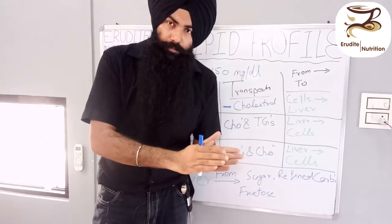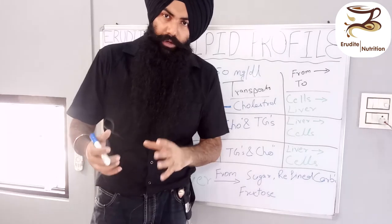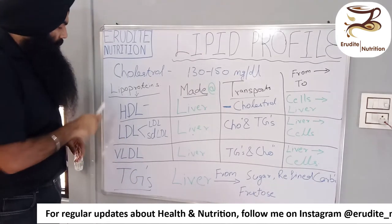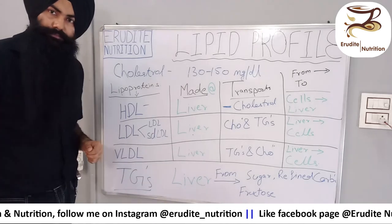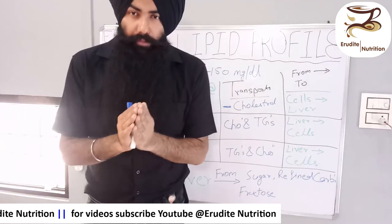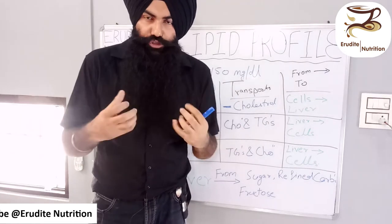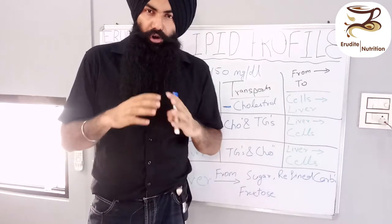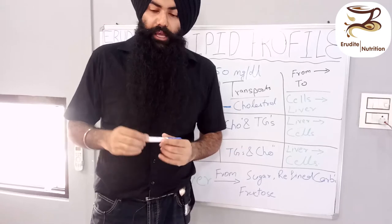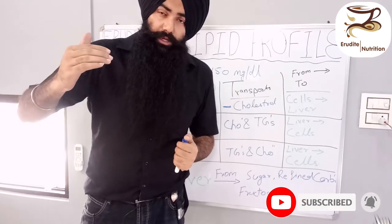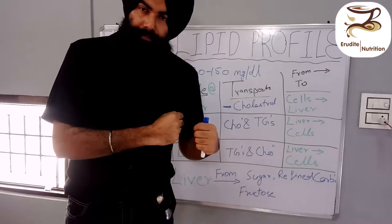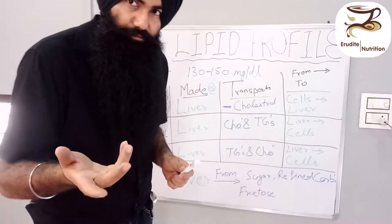This is a huge misconception — all three lipoproteins are made by our own liver and used to transport fatty molecules from liver to cells or from cells to liver. Triglycerides are also made in the liver, but they are not lipoproteins — they are a stored form of energy. When you have a surplus of glucose in your blood — from sugars, carbohydrates, proteins, or fats — your body converts that excess glucose into triglycerides and releases them into the bloodstream.